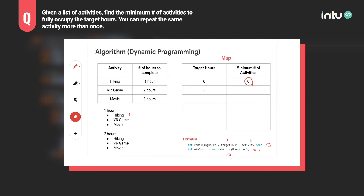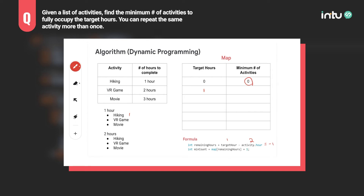For VR game and movie: target hours is still one, activity hours is two and three respectively, so the remaining becomes a negative number. That means with the given target hour, it's not possible to perform VR game or movie. So these two are simply impossible, and we update the target hour one with a min count of one.